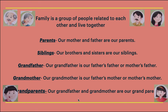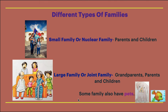Now we will learn different kinds of family. The first one is small family or nuclear family. The second one is large family or joint family. A small family is one in which mother, father and their children live together.